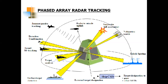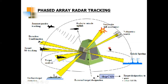Another picture illustrates the same capability: a phased array radar can simultaneously perform many tracking tasks — not only desirable target tracking, but also surface target detection, external target designation, and more. Many tasks can be done simultaneously. That is phased array radar tracking.